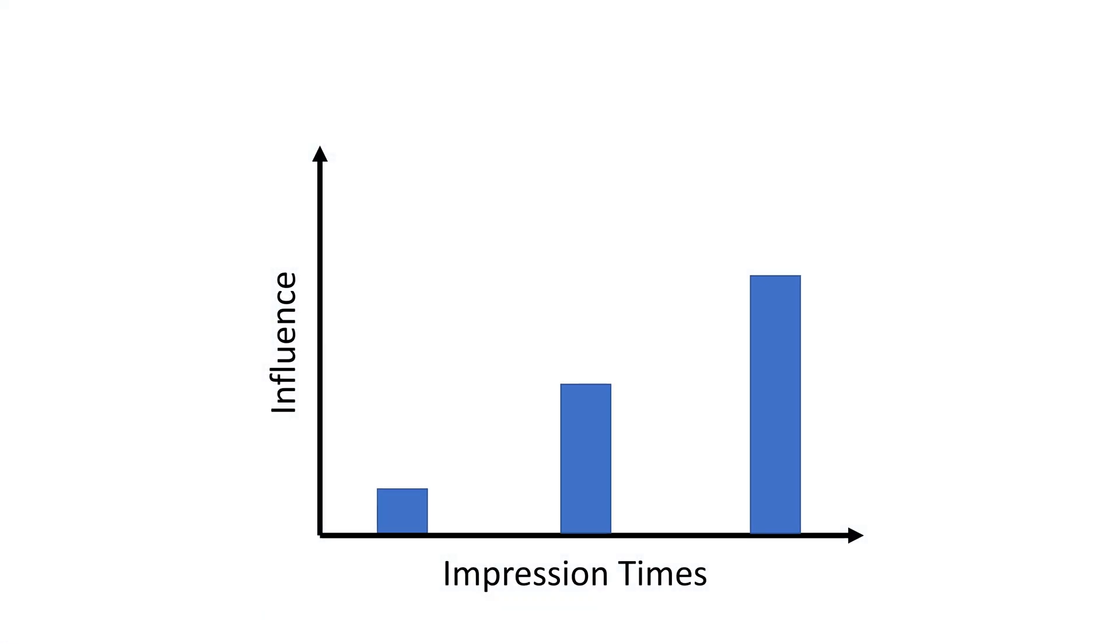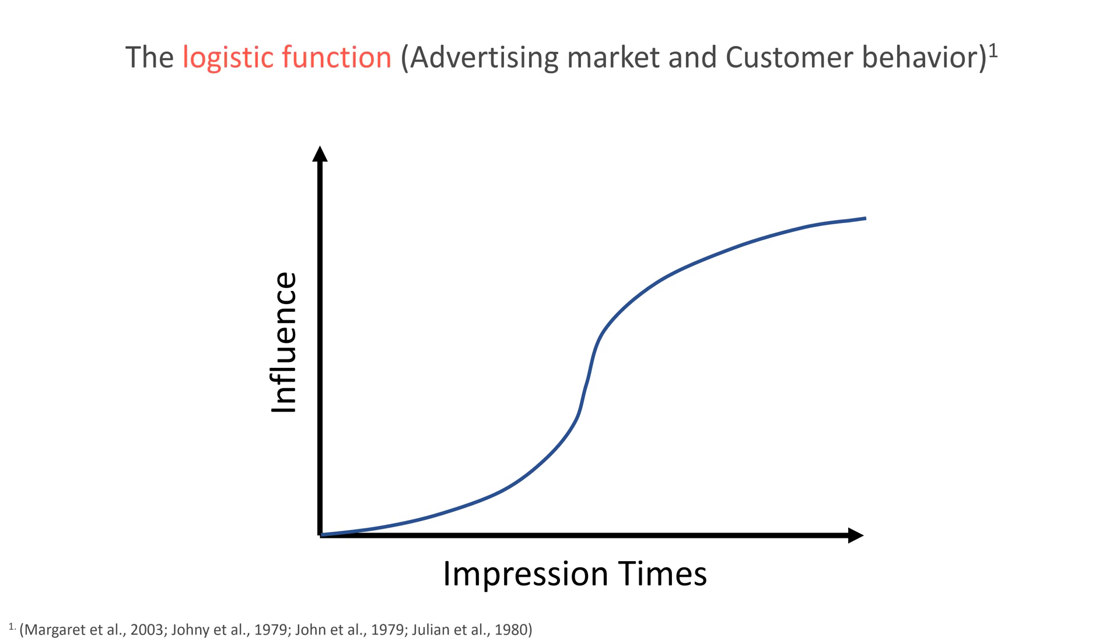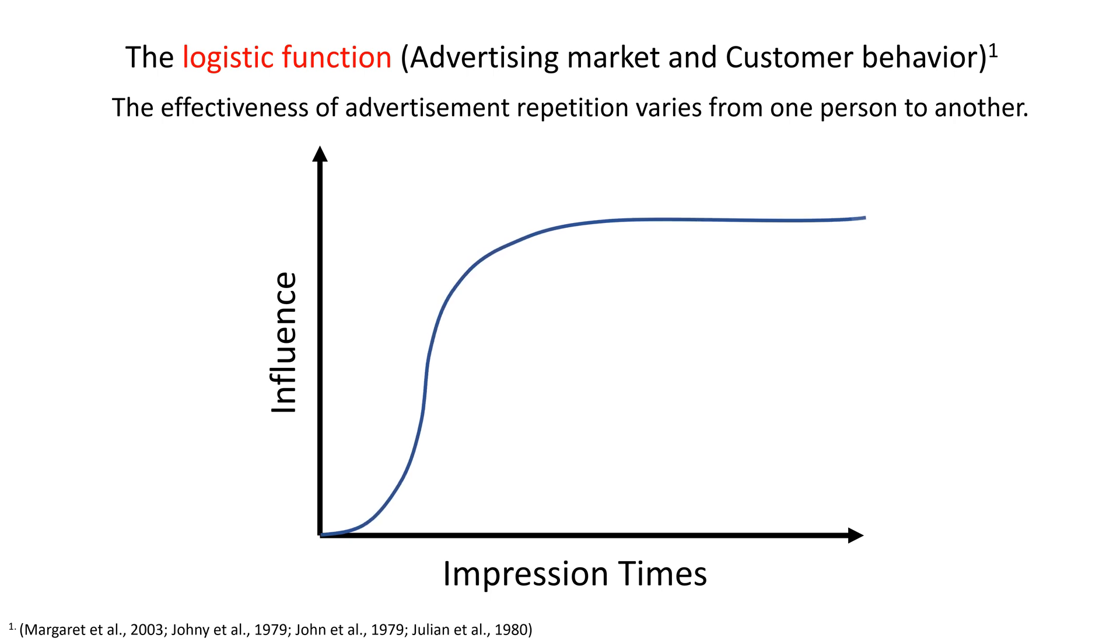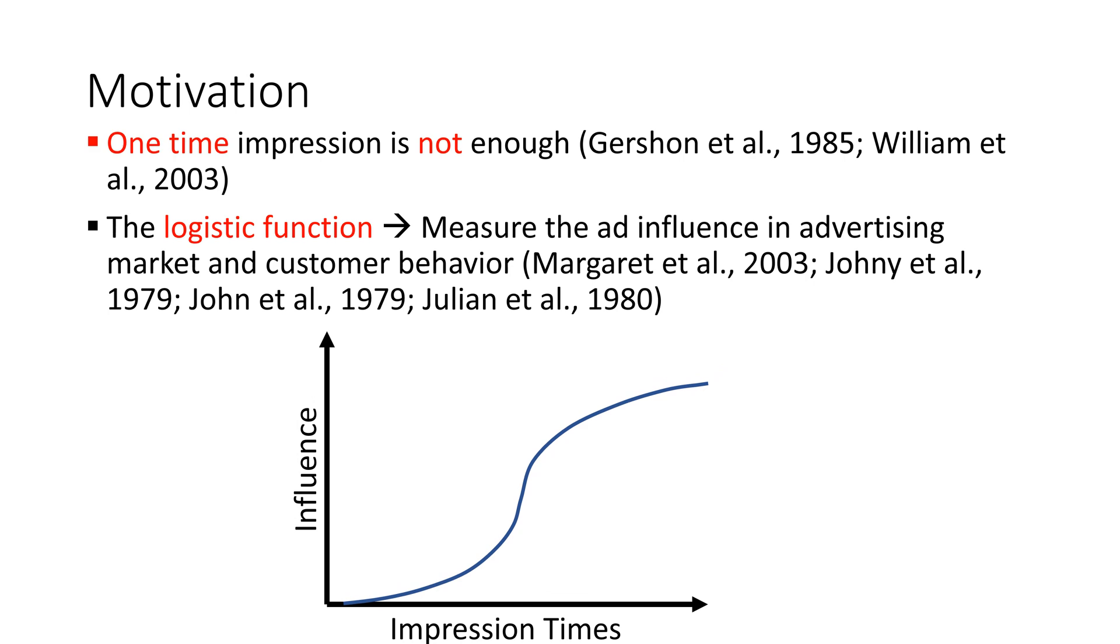Now, we know the influence increases when the impression times increase. Moreover, the logistic function should be considered as it is widely used to measure the advertisement influence. But like a great man once said, no two leaves are alike. For people who are easily impressed, only a few times of advertising can change their mind. For others who are stubborn, we need more advertising to influence them. By utilizing the logistic function, we can measure advertising effectiveness.